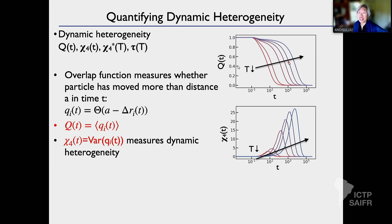I can also look at the variance of that overlap, from particle to particle or from initial time to initial time. That variance is peaked basically where the overlap is steepest — that's where the difference from particle to particle is the greatest. That's called chi four of t — the variance of the overlap — and it has a peak.